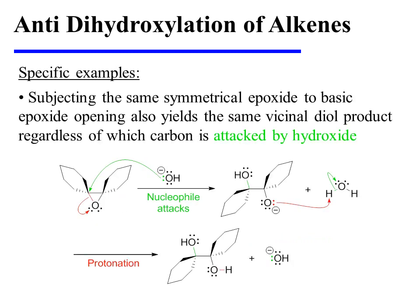If we subject the same symmetrical epoxide reactant to basic opening, the result will be the same. Hydroxide first attacks one of the two carbons of the epoxide, breaking open a carbon-oxygen bond. This results in an alkoxide intermediate, which is protonated by water to yield the vicinal diol. Given the reactant symmetry, the attack of hydroxide could have occurred at either epoxide carbon and would have yielded the same product in either case.